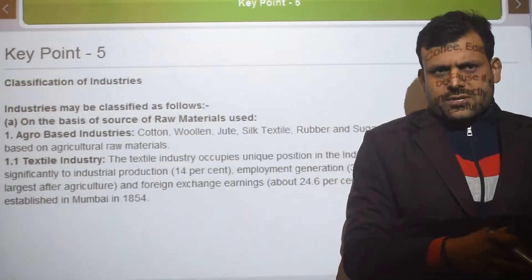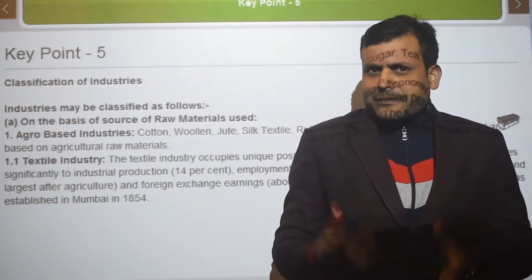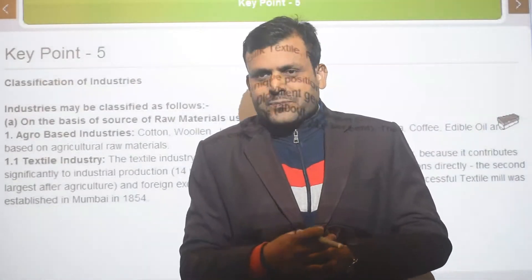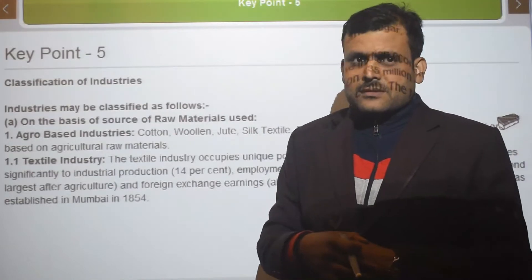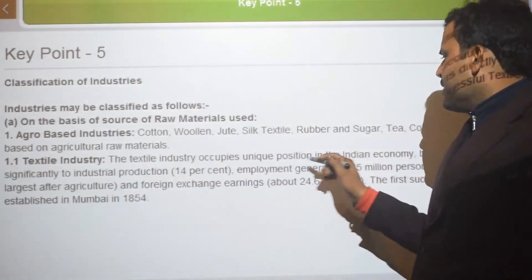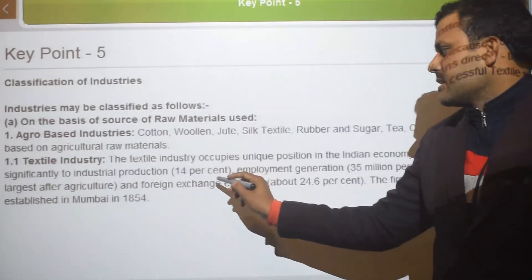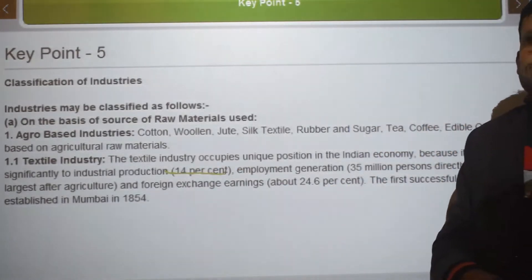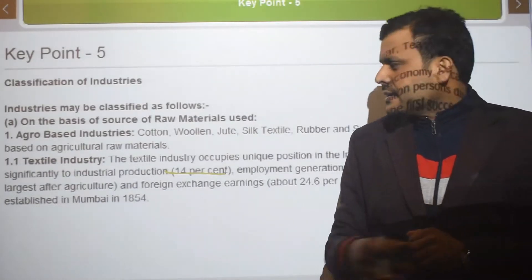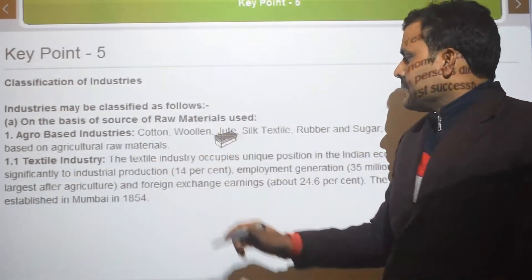Please note this down in your notes. Now, textile industries — what are textile industries? I taught this offline before, but for a better concept let us look at it again. Textile industries are the industries related to the clothes we wear. The textile industries occupy a unique position in the Indian economy because they contribute significantly to industrial production — 14%.